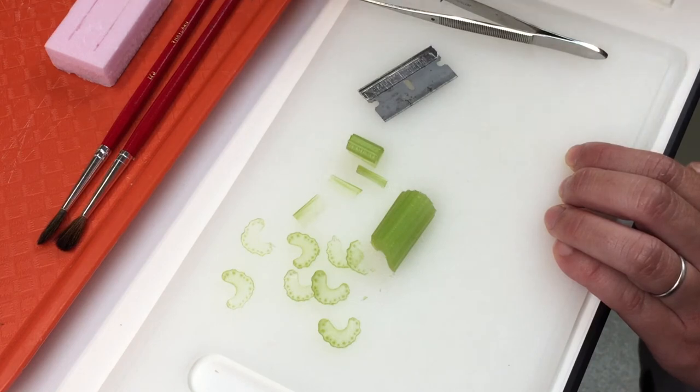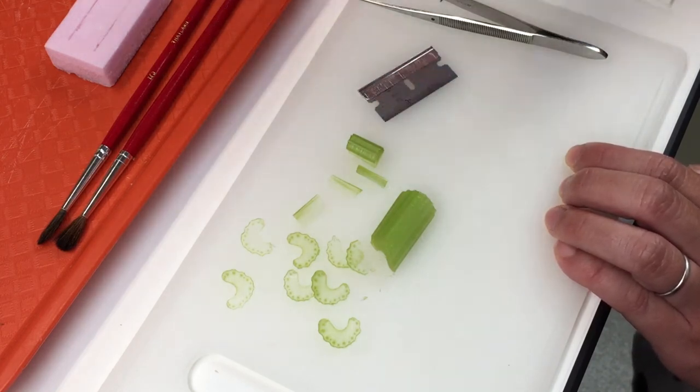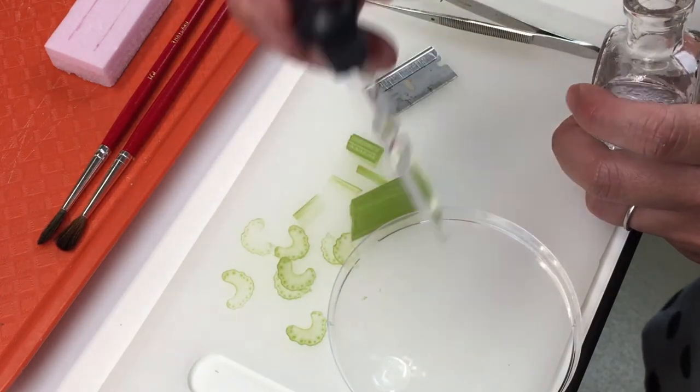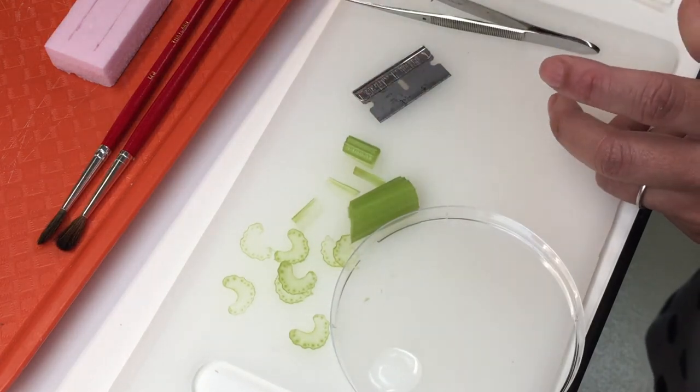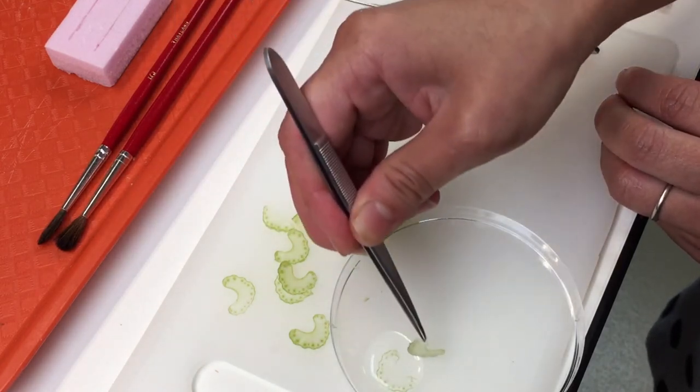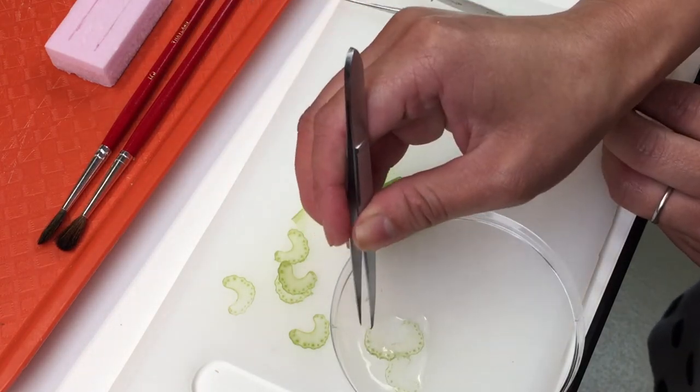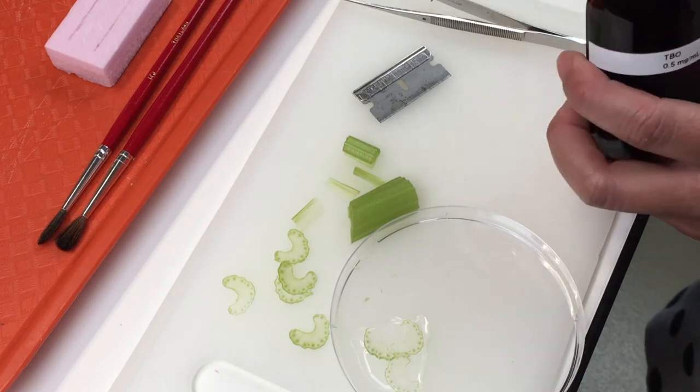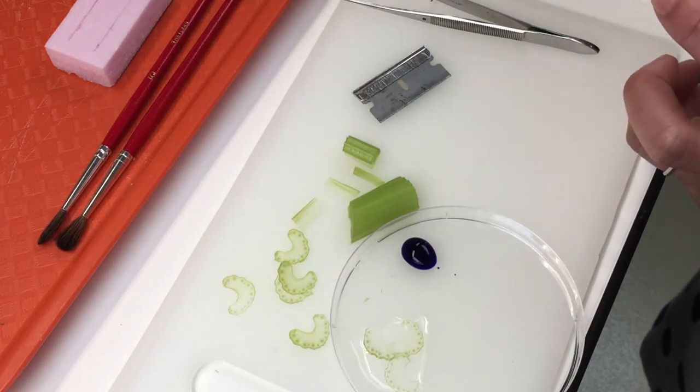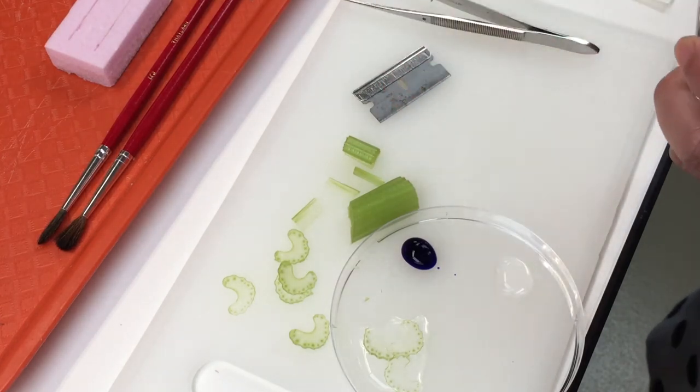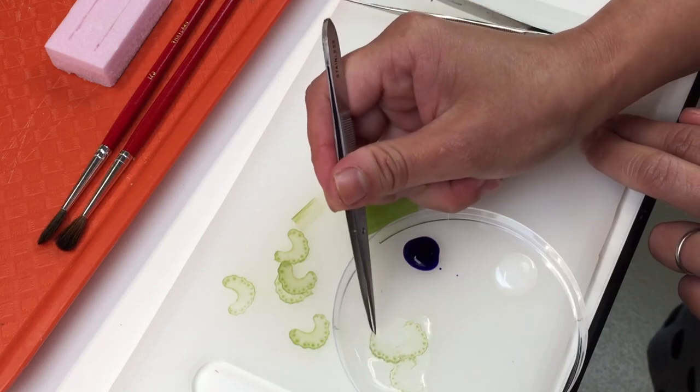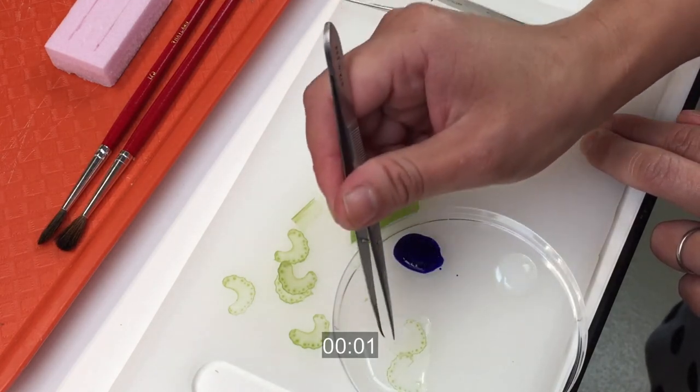Today for staining, we will use TBO or Toluidine Blue O to stain your specimens. First, drop one or two drops of water to prevent further desiccation of your tissue. Have another droplet of TBO for de-staining down the road. Put your specimen into the TBO stain for around one minute.